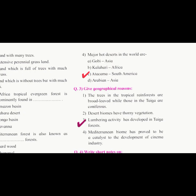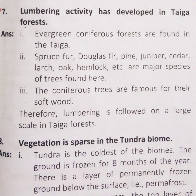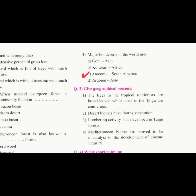Question 3, third: lumbering activity has developed in taiga forest. Lumbering is the process of harvesting forest and utilizing the forest products for commercial use — the trees are cut and the woods are sold. Question 3, fourth: Mediterranean biome has proved to be a catalyst to the development of the cinema industry.